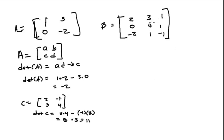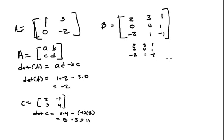Now that's just for a 2 by 2 matrix. For a 3 by 3 matrix, there's a nifty little trick you can do for coming up with a determinant. What you do is you have your original matrix, you can write it like that, and then you copy the first two columns over again.